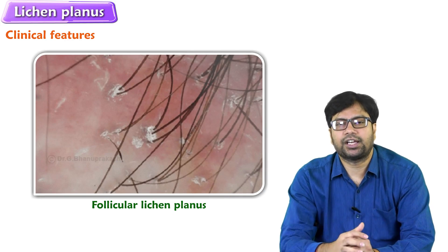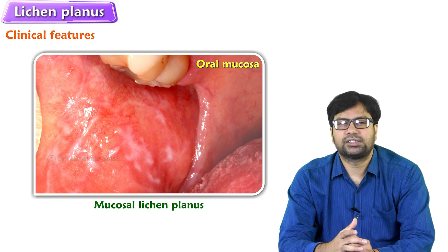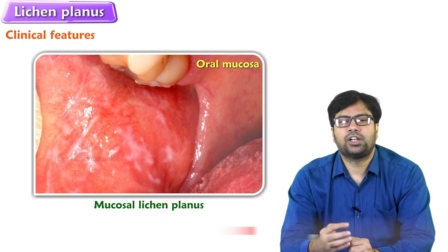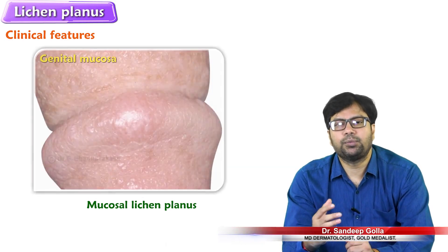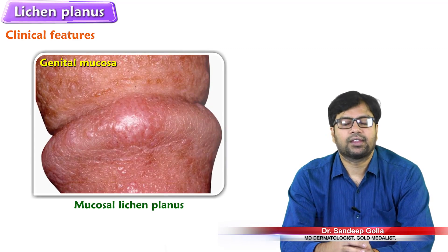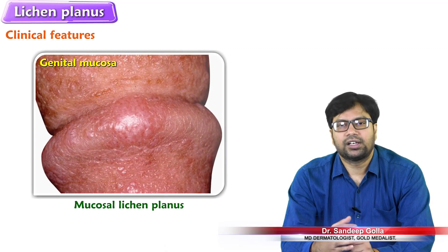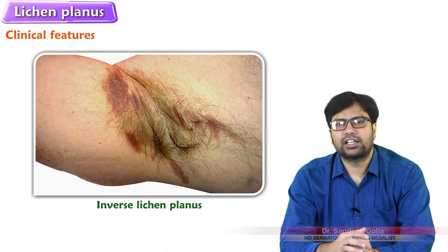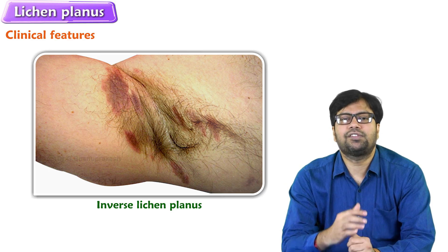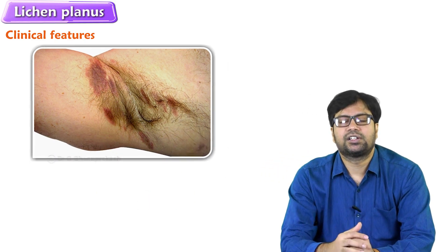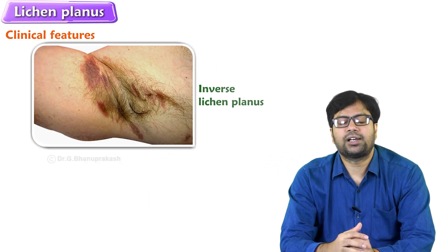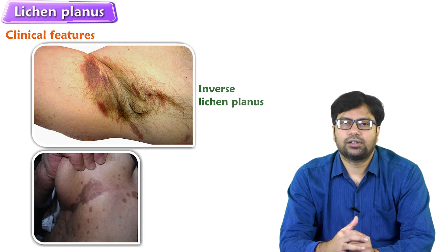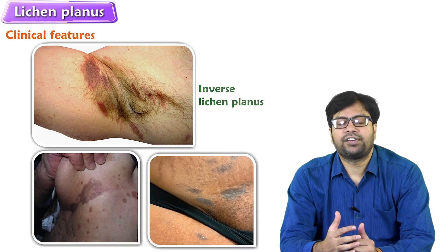Follicular lichen planus means lichen planus may infect the hair follicle — the root of the hair follicle — which causes permanent damage of the hair. Mucosal lichen planus means lichen planus involving oral mucosa and genital mucosa.